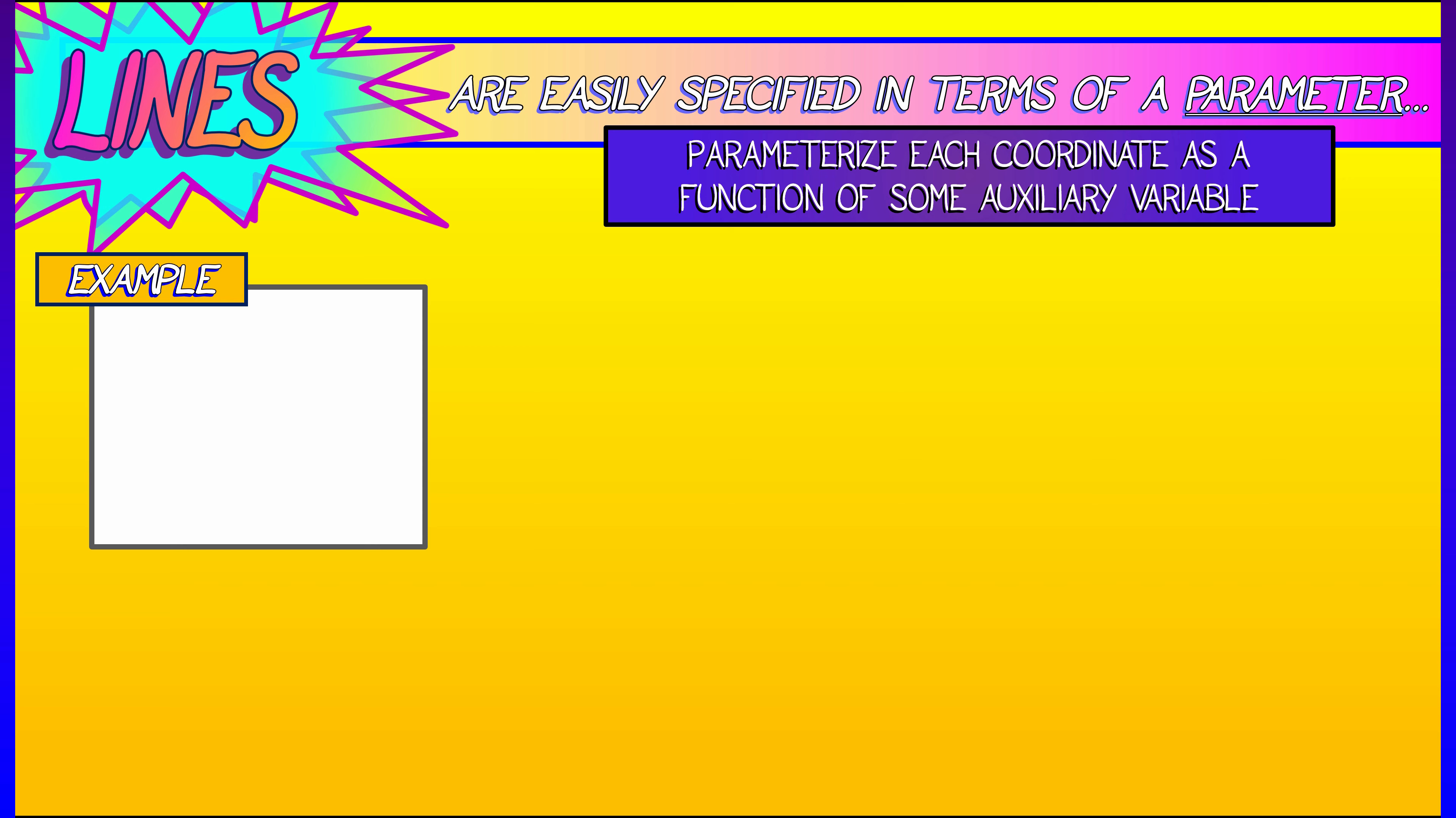let's say my parameter is r, and I tell you that x of r is 3r minus 5, that y of r is r plus 3, and that z of r is negative 4r plus 1. So as r goes from negative infinity to positive infinity, these x, y, and z coordinates trace out a line in three-dimensional space.